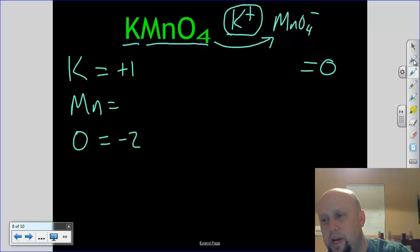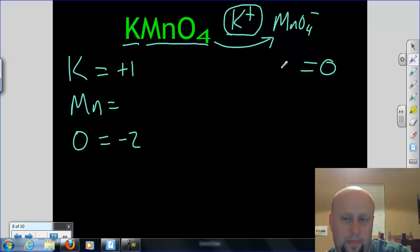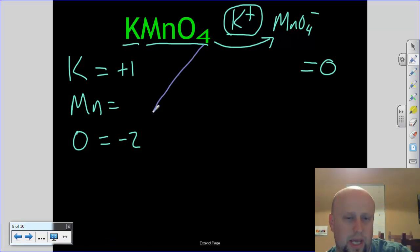So oxygen is negative two, but I have four of them. So I'm going to take this, and I'm going to multiply them. So four times negative two gives me a negative eight. I've got one potassium. It has a plus one charge, and then I have one manganese, and that's what I'm looking for, so that is x. Let me just clean this up real quick. That means it's going to be one plus x minus eight equals zero.